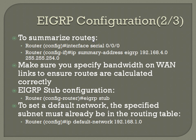If you want to configure a router as a stub router — for example, one with only a single link — you do it from router configuration mode: 'router eigrp' and then the AS number, then 'eigrp stub'. Pretty straightforward.